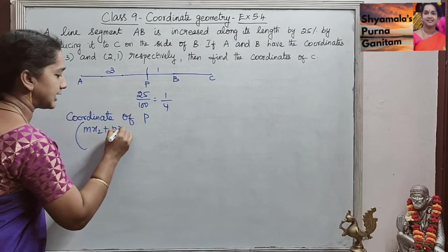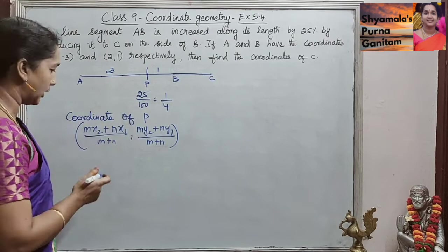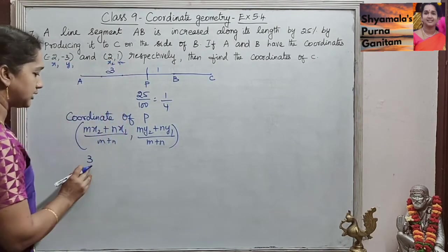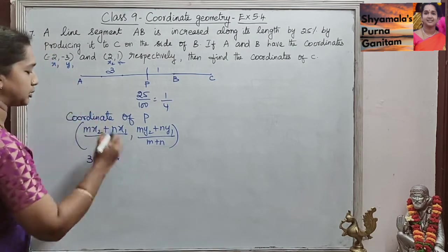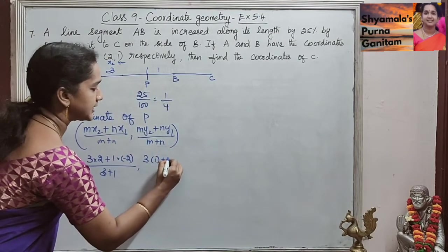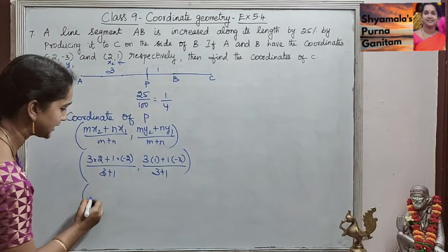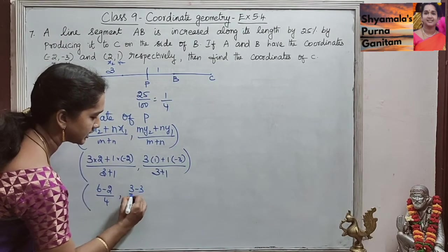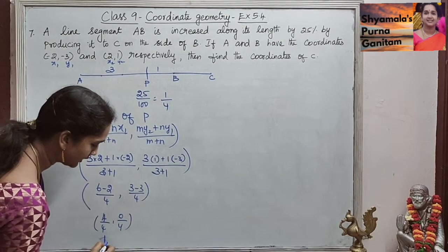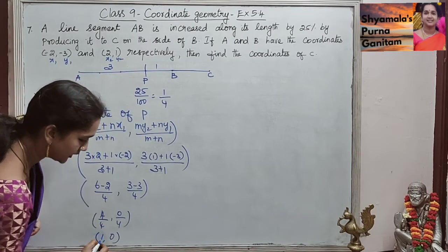Using the section formula: (mx₂ + nx₁) / (m + n), (my₂ + ny₁) / (m + n), where m = 3 and n = 1. Taking A as (x₁, y₁) = (-2, -3) and B as (x₂, y₂) = (2, 1): x = (3×2 + 1×(-2)) / (3+1) = (6 - 2) / 4 = 4/4 = 1; y = (3×1 + 1×(-3)) / (3+1) = (3 - 3) / 4 = 0/4 = 0. So the coordinate point of P is (1, 0).